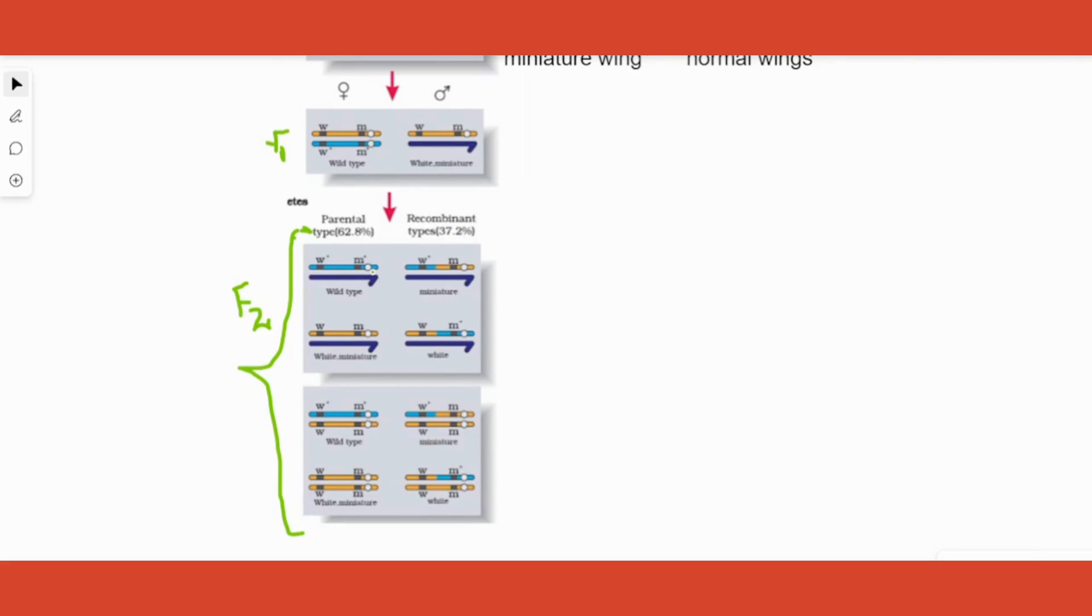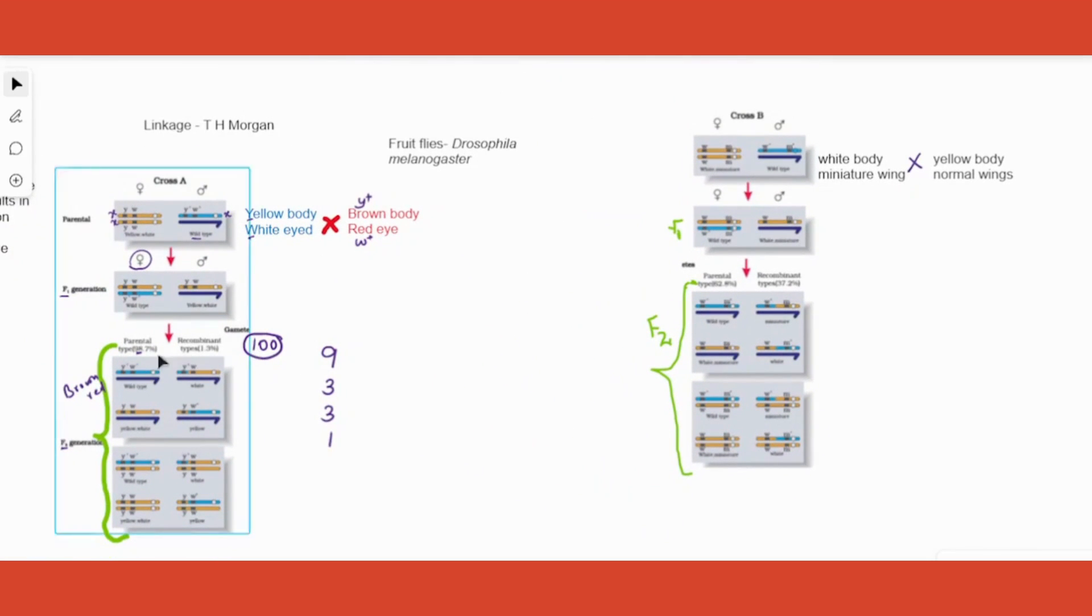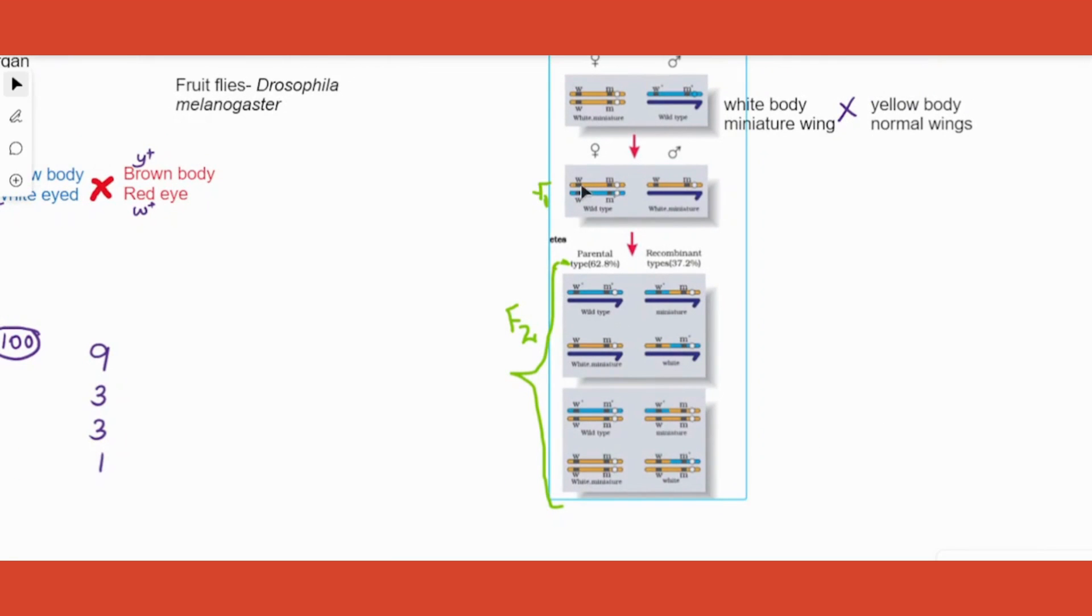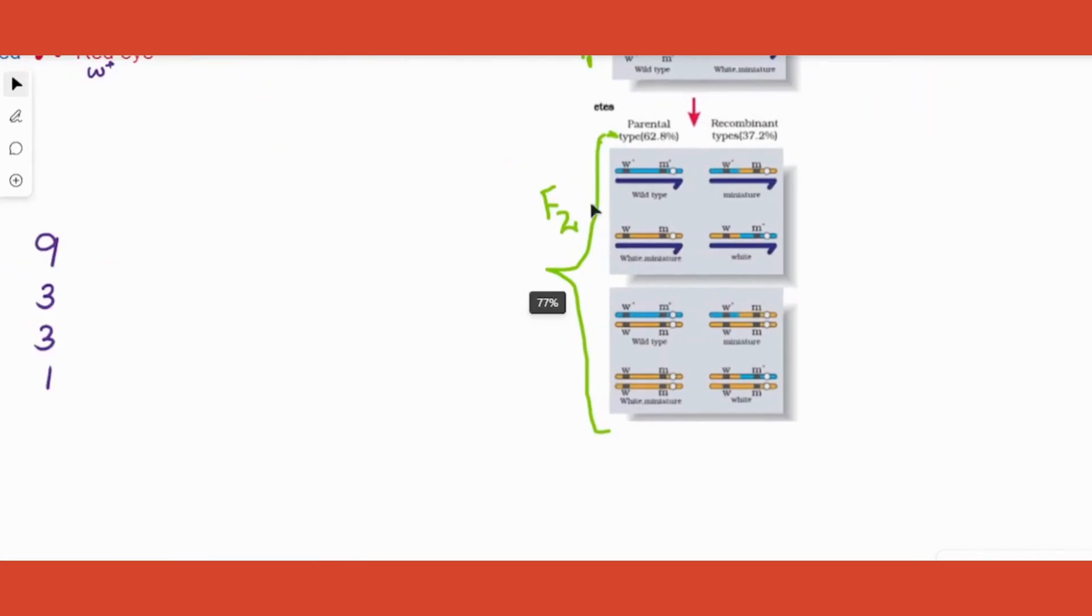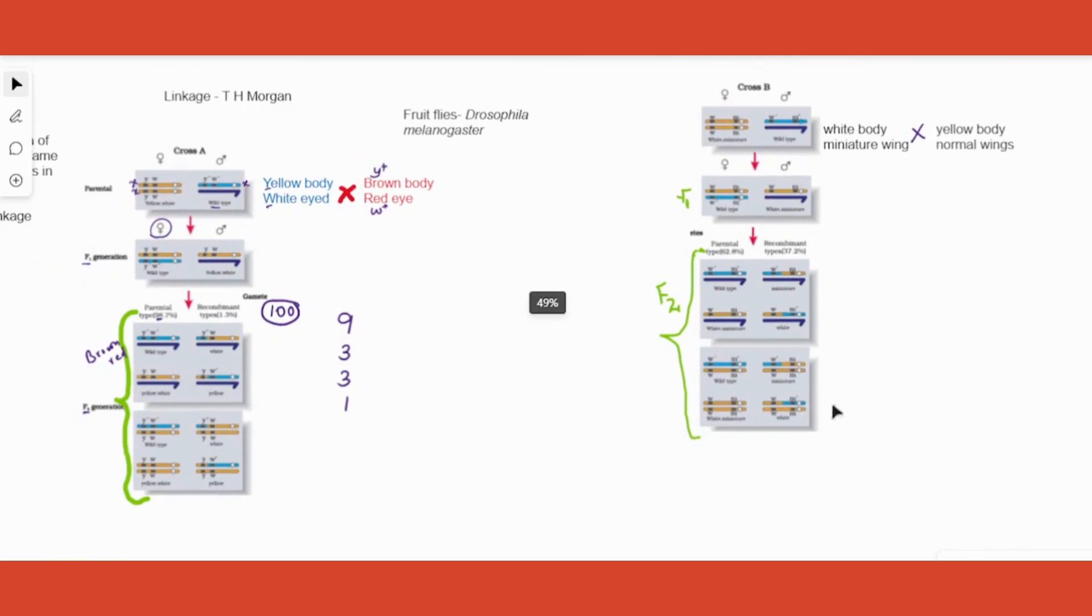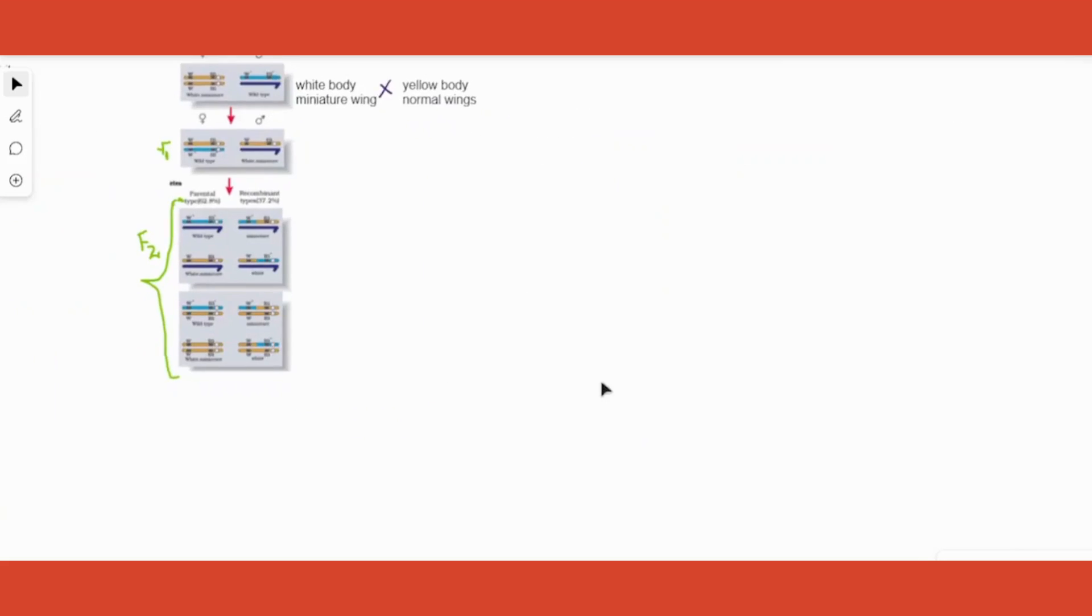What was different in the first case and this case? In Cross A, 98% was parental, but in this case it was only 62%. What is different is the distance between the genes. In the previous case, Y and W are just next to each other, but in this case they are a little far apart. So he realized that linkage is also proportional with distance between the genes. If the genes are very close to each other, that means the linkage is more - they do not separate during gamete formation. When is linkage seen more? When the proximity of the genes is greater, that is, when genes are nearer, linkage is more.